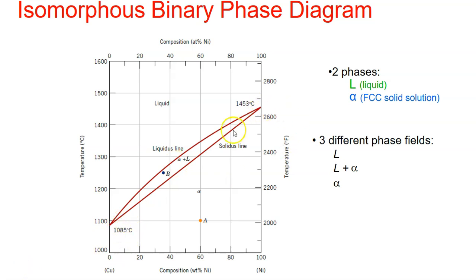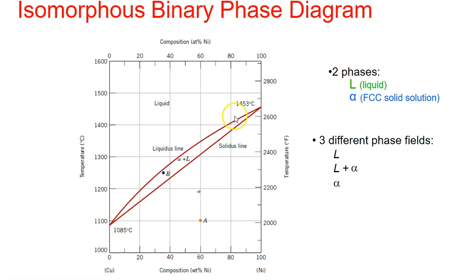The solidus and liquidus lines intersect at two composition extremes, which correspond to the melting temperatures of the pure components. The melting temperatures of pure copper and pure nickel are 1085 and 1453 degrees Celsius respectively. At 1085°C we find 100% copper, and at 1453°C we find 100% nickel — at these temperatures all of each pure metal is in the liquid state.